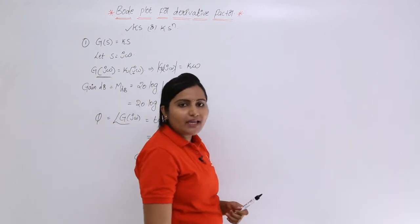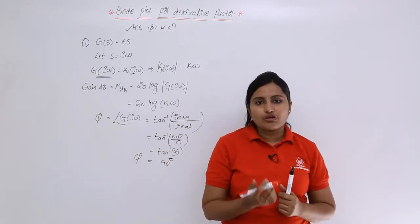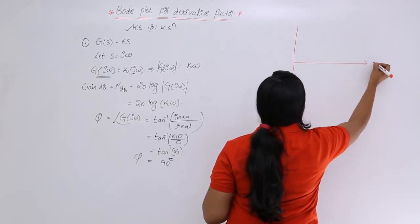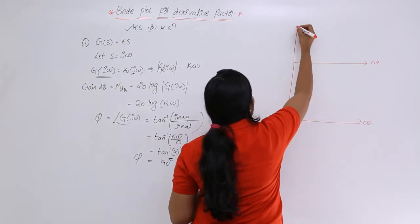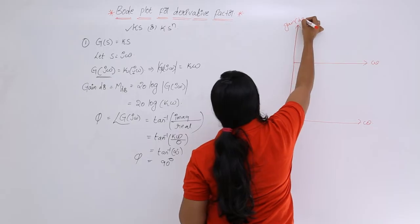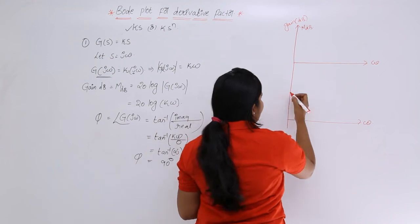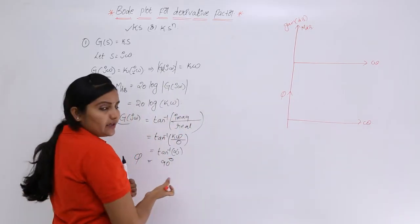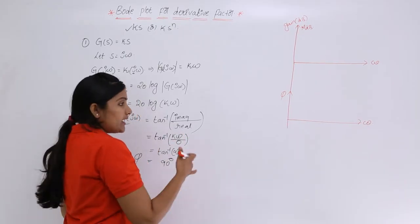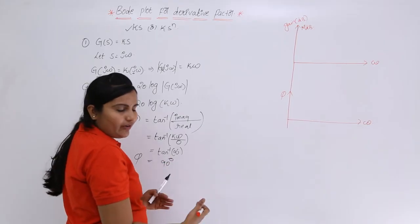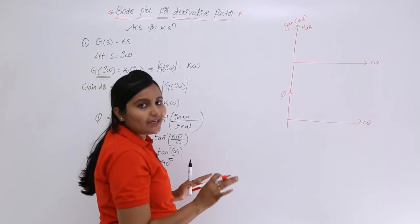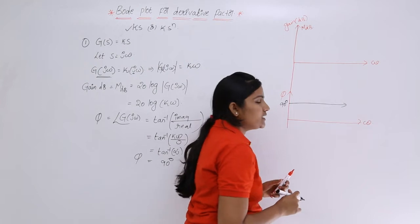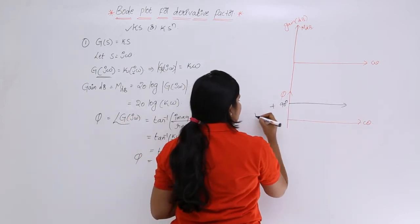φ = +90°. Once phase and magnitude are calculated, we can draw the Bode plot with both magnitude and phase plots. Both share the same x-axis (ω); the y-axis for the magnitude plot is gain in dB, and for the phase plot it is φ. For any value of ω — whether 0, 1, 2, 3, −1, −2, −3, or anything — you get 90° because there is no real term. So for all values of ω, φ = +90°, giving a constant horizontal phase plot at +90°.